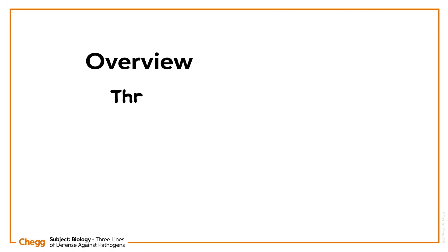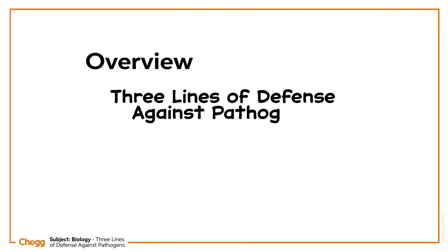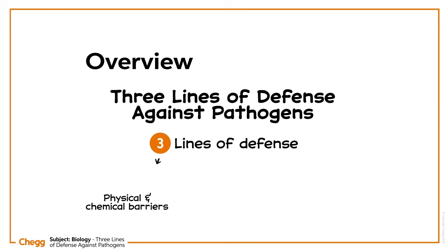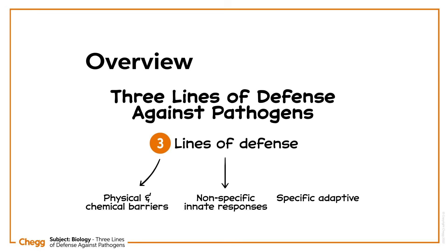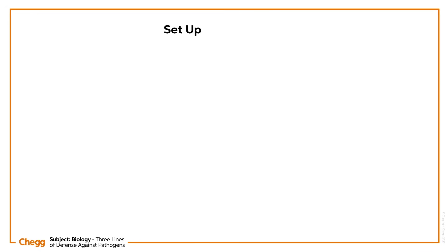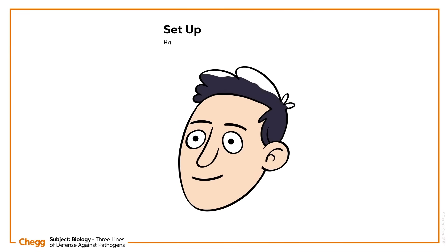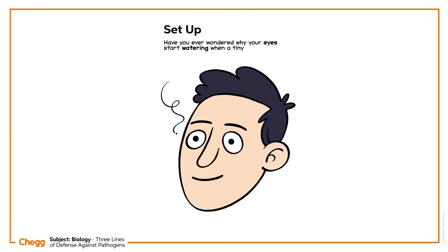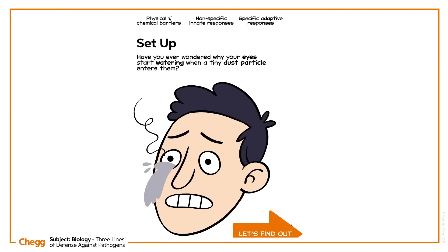Today we are going to discuss the human body's three lines of defense against pathogens, which include physical and chemical barriers, non-specific innate responses, and specific adaptive responses. Before that, let's consider a situation. Have you ever wondered why your eyes start watering when a tiny dust particle enters them? Let's find out.